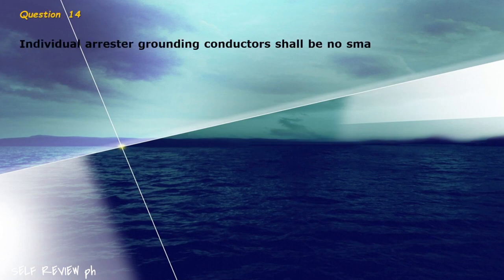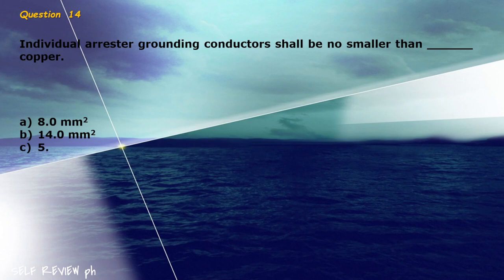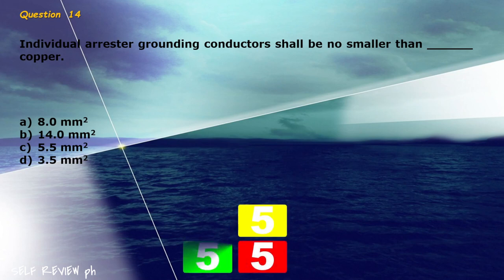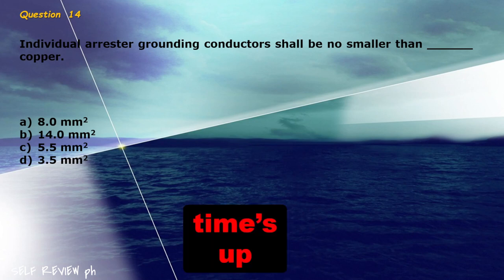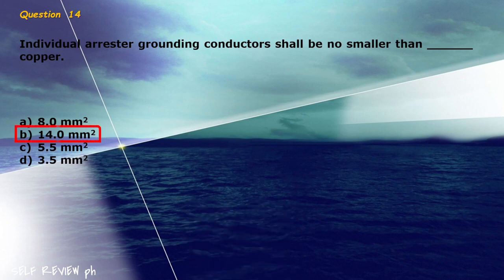Question 14: Individual arrestor grounding conductors shall be no smaller than blank copper. A) 8.0 mm², B) 14.0 mm², C) 5.5 mm², D) 3.5 mm². The correct answer is letter B, 14.0 mm².